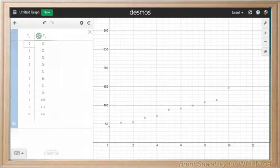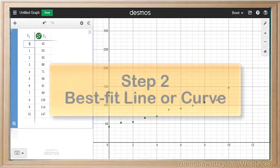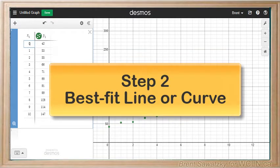Either way, as your data is entered, it appears in the graphing area. Step two: determining a best fit line or curve.